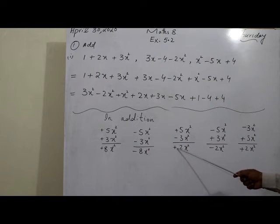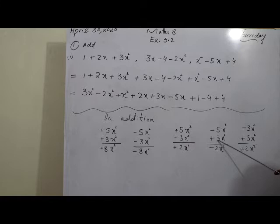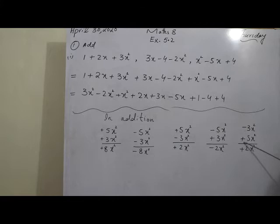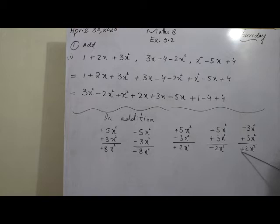If it is negative 5 and positive 3 — different signs — subtract: 5 minus 3 equals 2, and since 5 is the larger amount here, we take its sign, which is negative. Similarly, if it is minus 3 and plus 5, the larger amount is 5, so the answer is positive 2. Always subtract from the larger number and use its sign in the answer.